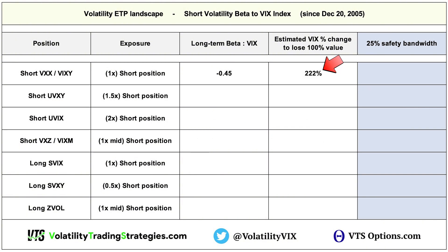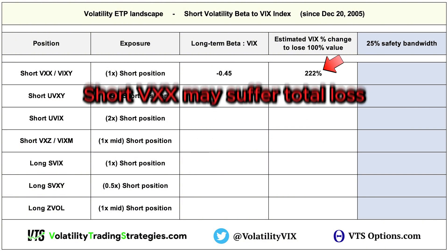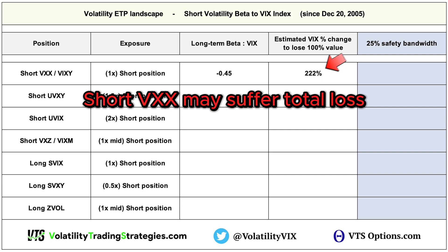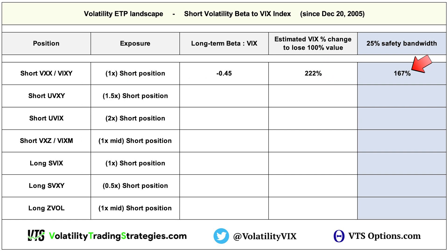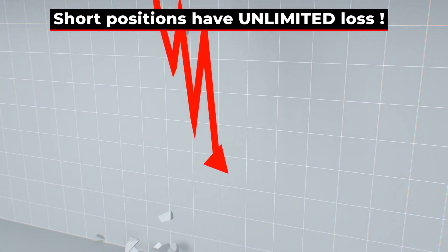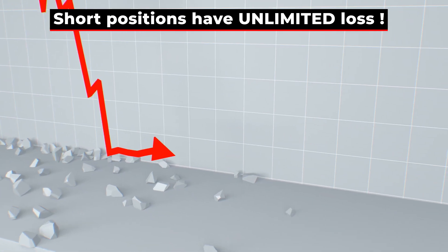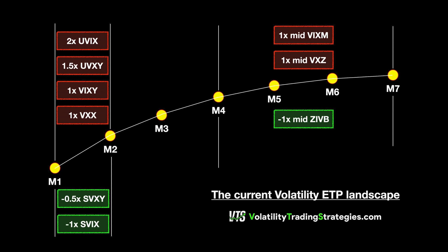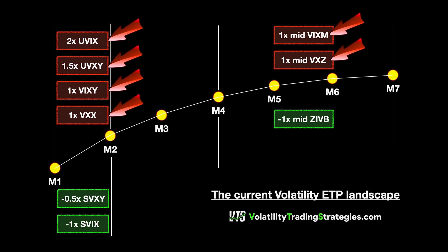If the VIX were to go up about 222%, you would lose the full 100% of your short VXX position. Since it varies by crisis, I think it's a good idea to include a 25% buffer range — long term, a VIX spike of 167% would potentially take a short VXX position to zero. Short positions do have unlimited loss, so it doesn't stop at zero just because the math does.